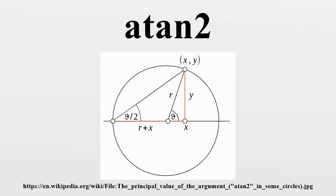For any real number arguments x and y not both equal to zero, atan2 is the angle in radians between the positive x-axis of a plane and the point given by the coordinates on it. The angle is positive for counterclockwise angles and negative for clockwise angles.